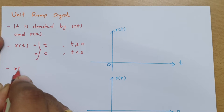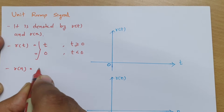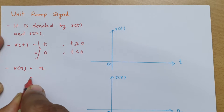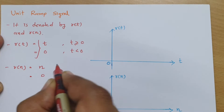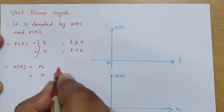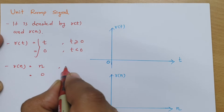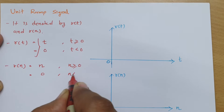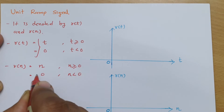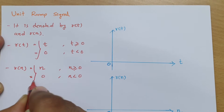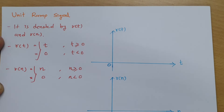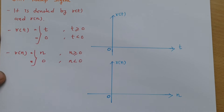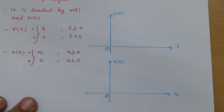In discrete time, r[n] equals n where n is greater than or equal to 0, and it will be 0 for n less than 0. So this is how we define the unit ramp signal in discrete time. Now let us try to draw it graphically.